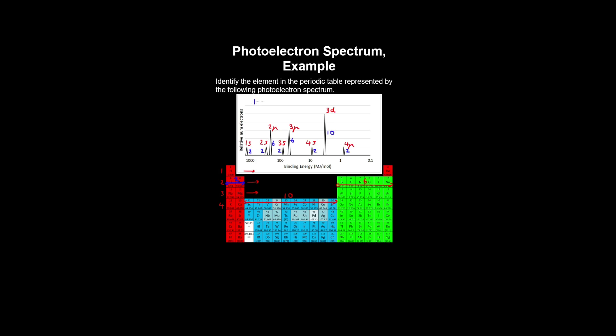So we can write the electron configuration of our element as follows, and this is the electron configuration of germanium.